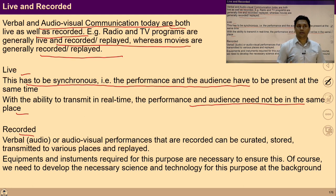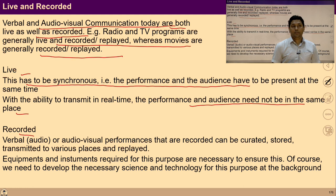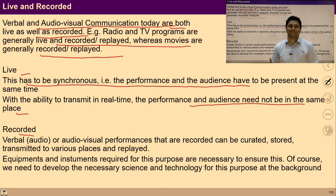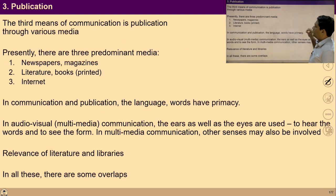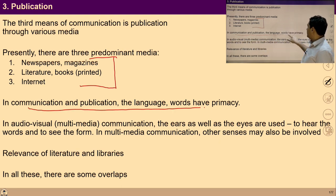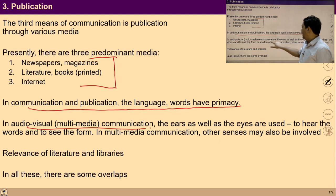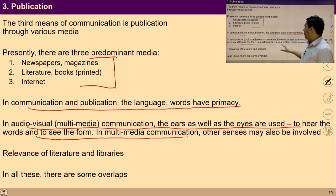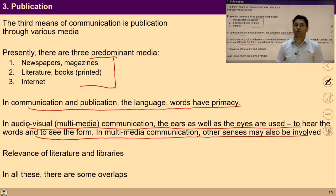Various forms of audio-visual communication have a whole range of possibilities like drama, plays, etc. Presently, there are three prominent media: newspaper, magazine, literature and books, and the internet. In communication and publication, language and words have played a very important role. In audio-visual communication, both the ears and the eyes are used — words as well as visual form. In multimedia communication, other senses may also be involved.